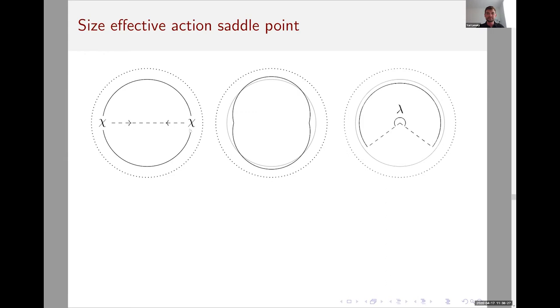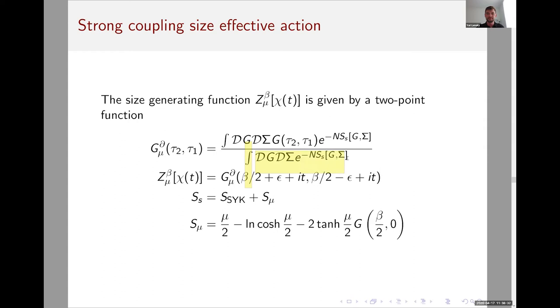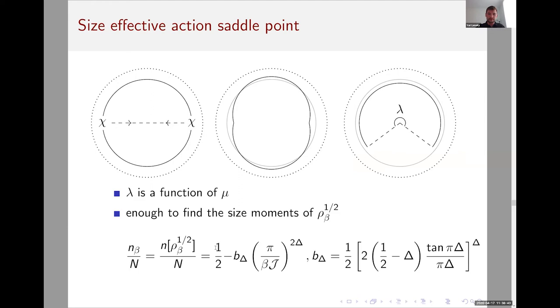Already at this stage, we have enough to find the size moments of the density matrix just by finding the saddle point. The reason is that this piece, properly normalized, is just the generating function for the size moments of rho_beta. For example, here I listed the size of rho_beta as a function of beta J at strong coupling. This is the B_delta that I promised I would show you. Something important to note is that it is proportional to n. The density matrix is a large operator.